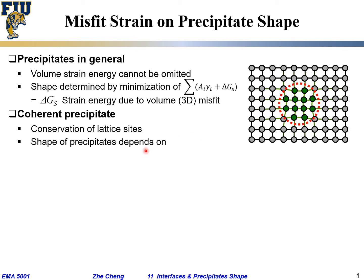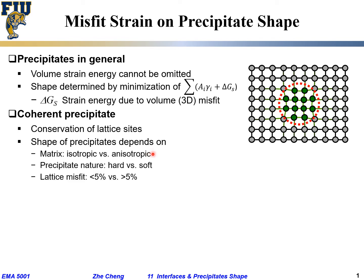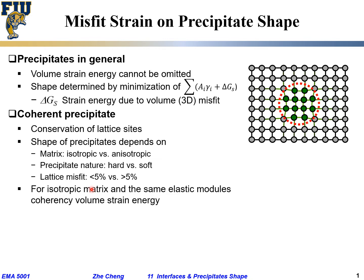The shape of such a precipitate would depend on several things. One is what material the host is — whether the host is soft or hard. If the host is very soft, your precipitate can push and the host easily gives away, so whatever shape the precipitate wants to take, the host would accommodate it. It also depends on the precipitate nature — whether the precipitate is hard or soft, whether the host is isotropic versus anisotropic, and what the misfit is. Many things determine the shape of the precipitate together.